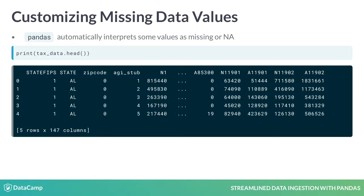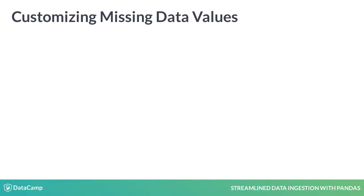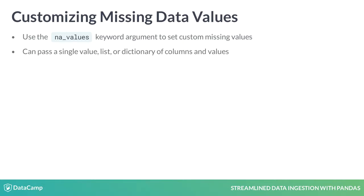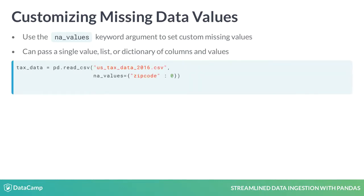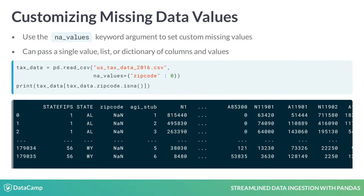In the tax data, records were sorted so that the first few have the zip code 0, which is not a valid code and should be treated as missing. We can tell Pandas to consider these missing data with the na_values keyword argument. na_values accepts either a single value, a list of values, or a dictionary of columns and values in that column to treat as missing. Let's pass a dictionary specifying that any zeros in zip code should be treated as missing data. Then, we filter the data using the isna method on the zip code column to view rows with missing postal codes.